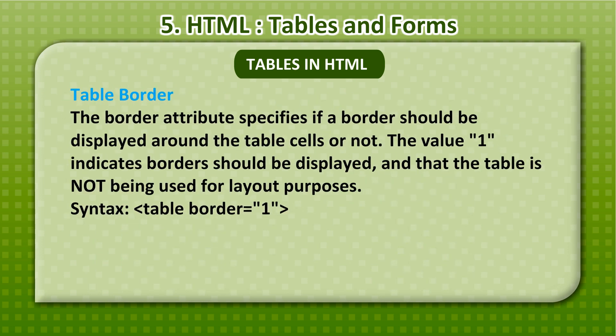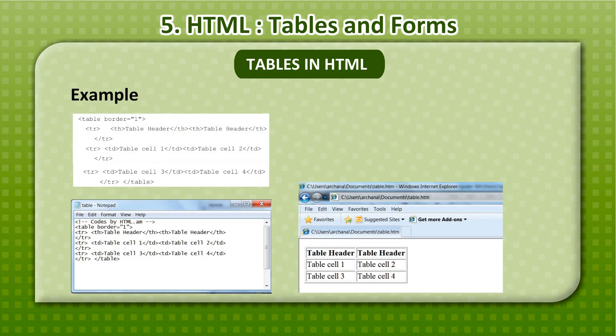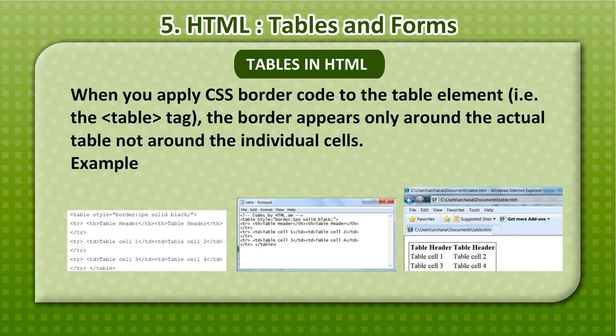Table Border: The border attribute specifies if a border should be displayed around the table cells or not. The value 1 indicates borders should be displayed and that the table is not being used for layout purposes. Syntax: table border=1. When you apply CSS border code to the table element — that is, the table tag — the border appears only around the actual table, not around the individual cells.